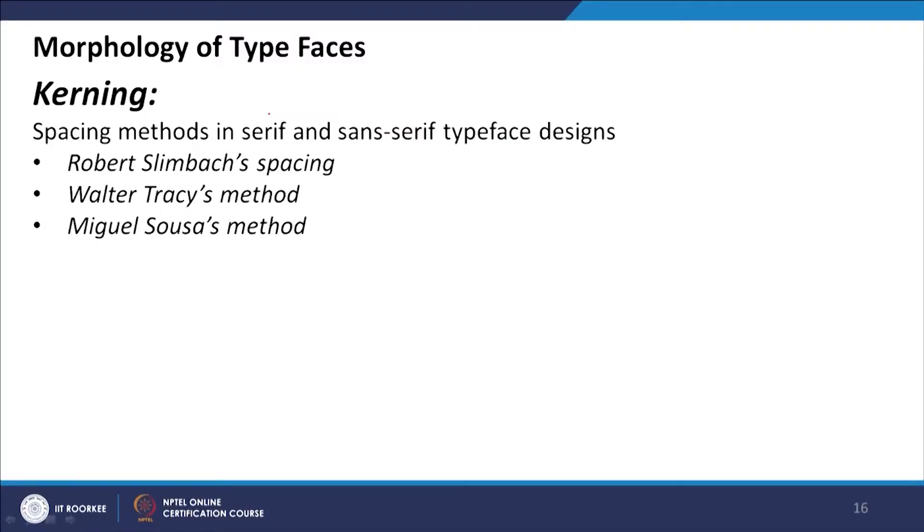When designing a logo or a heading using different typefaces with different x-heights, this sense of kerning helps you create the design. You can use a bigger font juxtaposed with a smaller font, and kerning is very important in such experimentation with typography. There are also different spacing methods that typography designers use for serif and sans-serif design — Robert Slimbach's method, Walter Tracy's method, and Miguel Souza's method of kerning are three of the most important approaches.